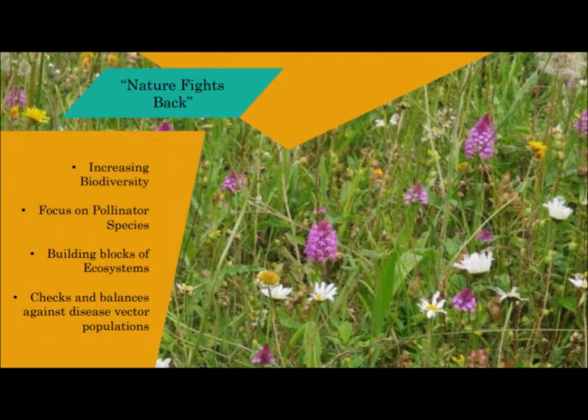One of the methods we have explored was to adopt a more comprehensive and holistic approach by constructing sustainable environments conducive to supporting a biodiversity of life. Insects make up some of the essential building blocks of our ecosystem. By restoring the biodiversity of urban communities with a focus on beneficial species such as pollinators, we believe we can reintroduce natural checks and balances that keep the population of problematic species and disease vectors in check.